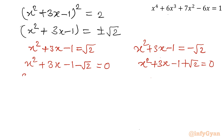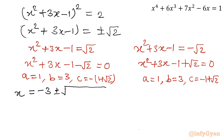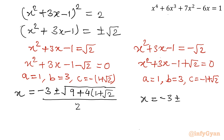For the first equation: a = 1, b = 3, c = -(1 + √2). For the second equation: a = 1, b = 3, c = (-1 + √2). Applying the quadratic formula x = (-b ± √(b² - 4ac)) / 2a, we get x = (-3 ± √(9 - 4·1·(-(1+√2)))) / 2 and x = (-3 ± √(9 - 4·1·(-1+√2))) / 2.